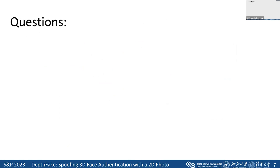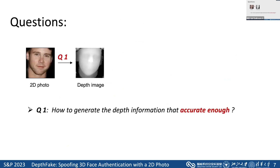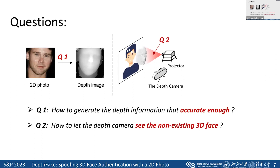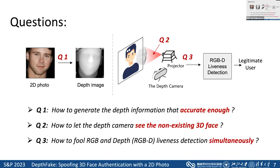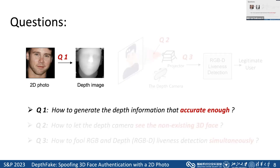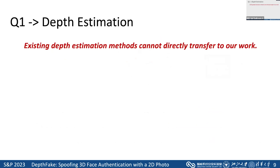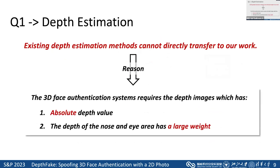To execute this attack, there are some questions we need to address. The first is how to generate depth information that is accurate enough to fool the system. The second is how to let the depth camera see a non-existing 3D face. The last is to fool the RGB and depth liveness detection at the same time, since commercial systems use RGB and depth modality together. We tried existing depth estimation methods but found they didn't work, because commercial 3D face authentication systems require depth images with absolute depth values, focusing more on the nose and eye regions.